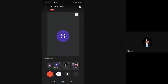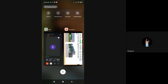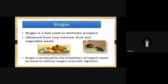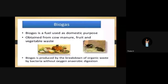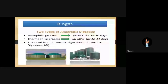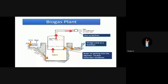LPG — Liquid Petroleum Gas — is the best example of biogas we commonly use. Biogas is a fuel used in domestic purposes — day-to-day life. Commonly used biogas is LPG, obtained from cow manure, fruit and vegetable waste. Here is a picture of a biogas plant.